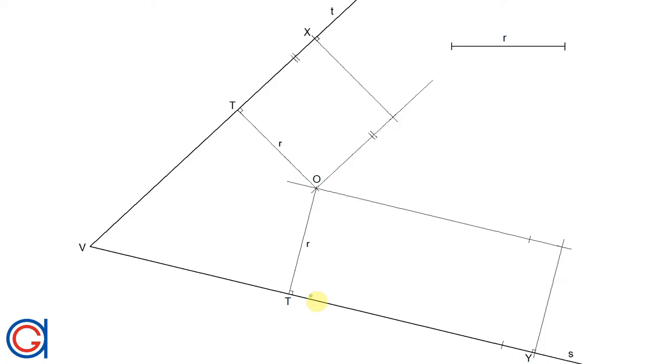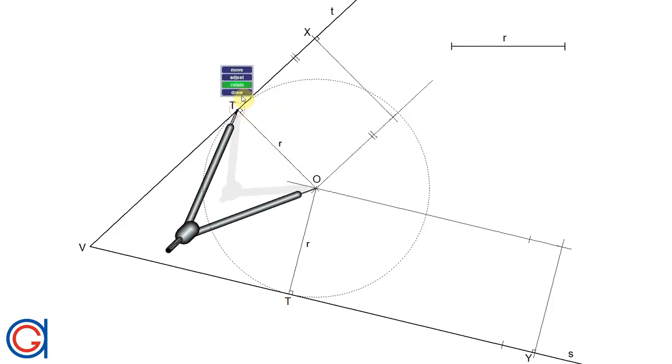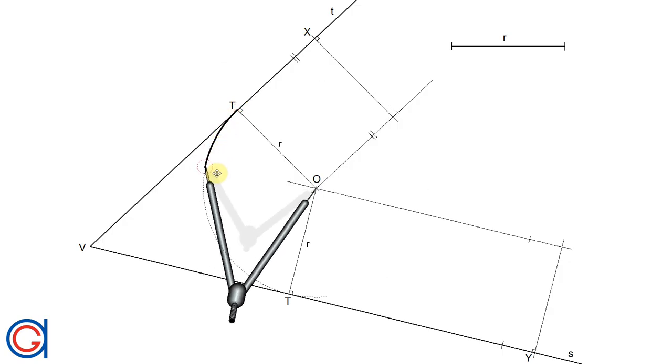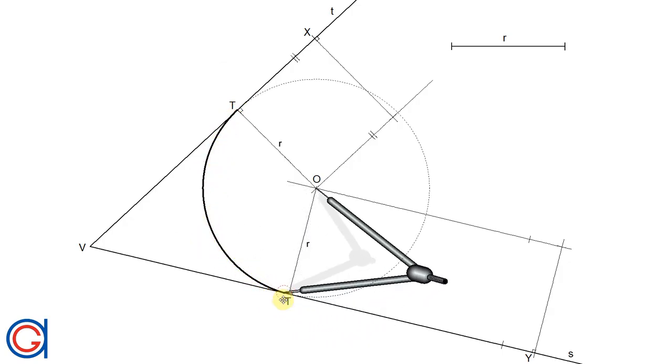So the final step, setting the compass to the given radius R and setting the compass on point O, we are going to draw the arc in a thicker line from tangent point 1 to tangent point 2, as can be seen here in the video. We can draw the other two lines in a thicker line also, as shown here.